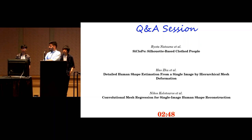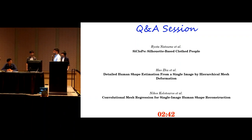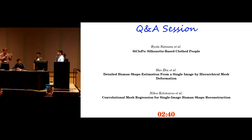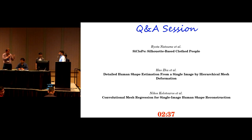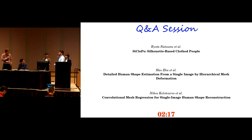Question for the last speaker: beyond hair and clothing, are there parts of the SMPL space that are hard to fit but your mesh-based representation handles better — for example, pose? Regressing 3D rotations is hard due to periodicity issues with axis-angle and discontinuities with quaternions. Our formulation of regressing 3D coordinates instead of pose parameters makes it more robust.